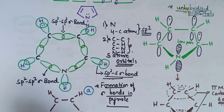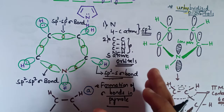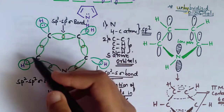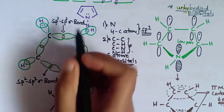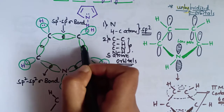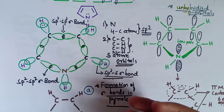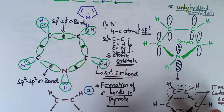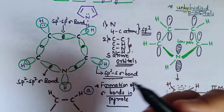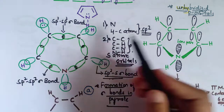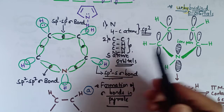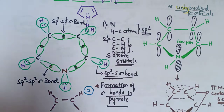To revise: in pyrrole, the nitrogen atom and the four carbon atoms are sp2 hybridized. These sp2 hybrid orbitals overlap with each other and also with the s atomic orbitals of the five hydrogen atoms. This gives four types of bonds: carbon–carbon, carbon–hydrogen, carbon–nitrogen, and nitrogen–hydrogen bonds.